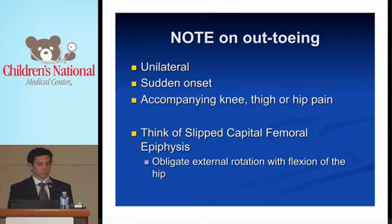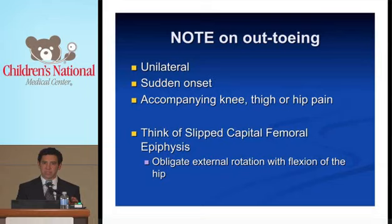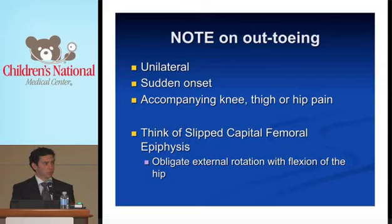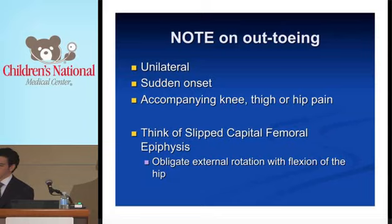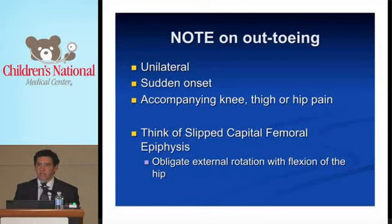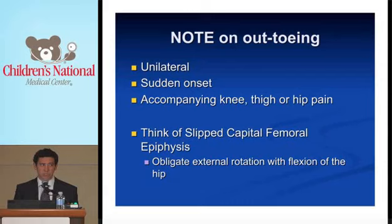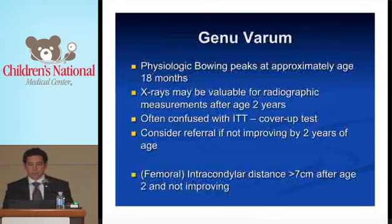Slipped capital femoral epiphysis is usually unilateral, with a gradual to sudden onset, and there is accompanying knee, thigh, or hip pain. Kids can have SCFE with absolutely no hip pain whatsoever — they may only complain of knee pain, typically pointing to the anterior knee. To evaluate: get the child supine, flex the hip and knee. If there's obligate external rotation as you do that, that suggests SCFE. Further confirm by getting the child prone and determining how much internal rotation they have in each hip. If they have decreased internal rotation on that side, especially accompanied by pain on gentle internal rotation, suspect SCFE. An AP and frog-leg lateral pelvis x-ray is required for that diagnosis.